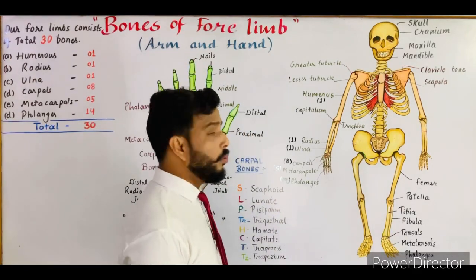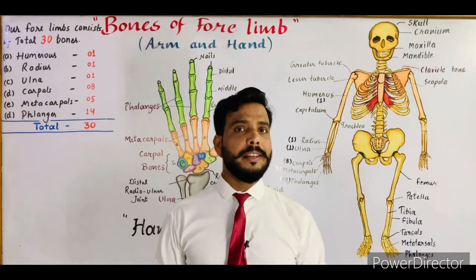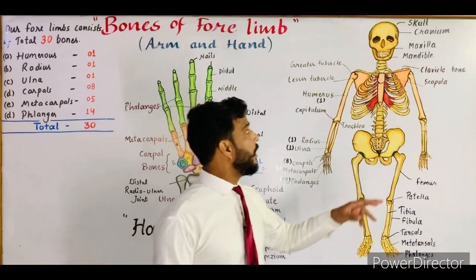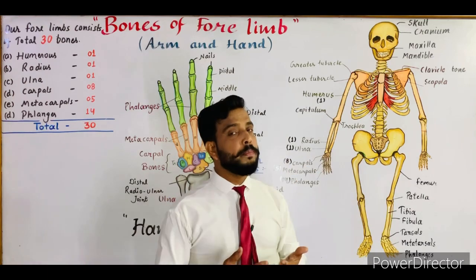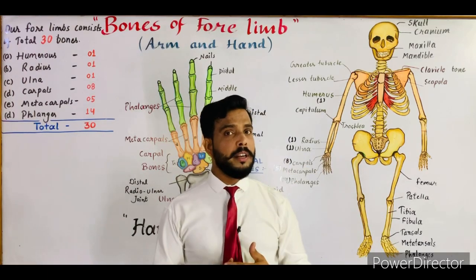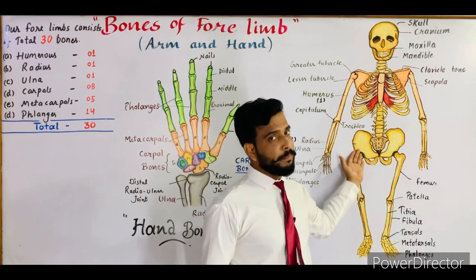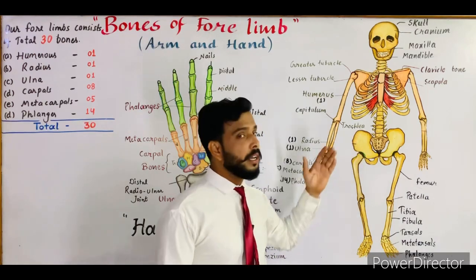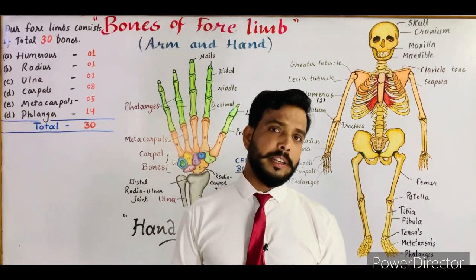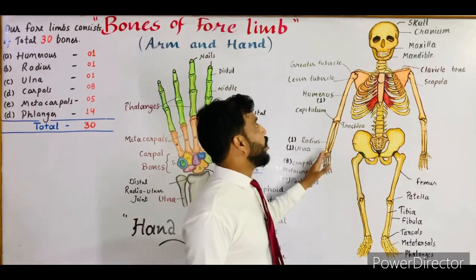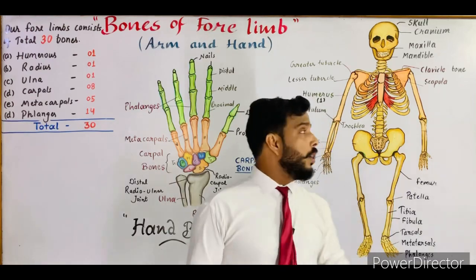Our skeletal system is divided into two main parts: the axial skeleton and the appendicular skeleton. The appendicular skeleton consists of the limbs and girdles. The pectoral girdles are formed by the fusion of two bones — the scapula and clavicle — and from the pectoral girdle the upper limbs arise. Similarly, the pelvic girdle gives rise to the lower limbs. These girdles and limb bones collectively form our appendicular skeleton, and the upper part is called the forelimb.